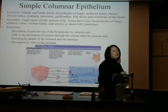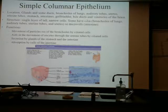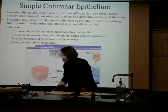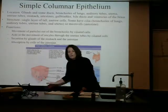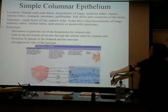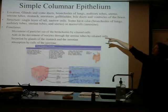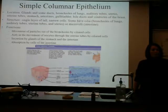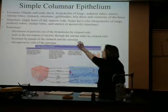Simple columnar: one layer, column shape — they look like rectangles. Once again, because the cells are avascular but have extracellular fluid and sit on connective tissue, they get their materials by diffusion. We're going to see these in some glands, bronchioles, auditory tubes, uterus, uterine tubes, stomach, intestines, gallbladder, bile ducts, and ventricles of the brain. Single layer of columns — they help to move materials.